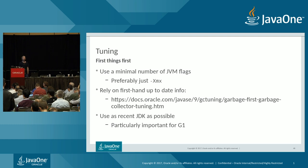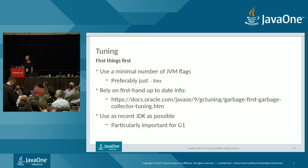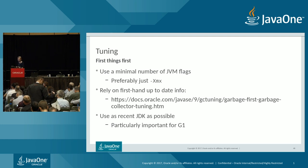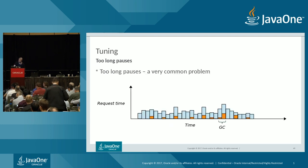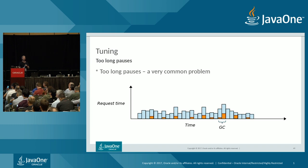Use as recent a JDK as possible — this is particularly important for G1, which has improved a lot in more recent JDK releases. The problem we'll look at today is: too-long pauses, which is what we often hear from users.